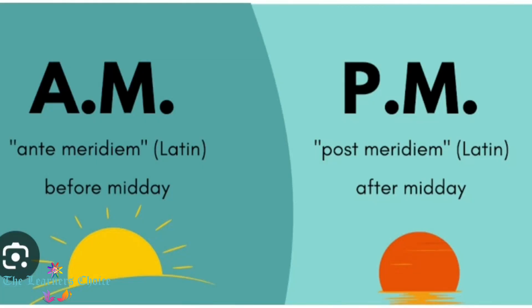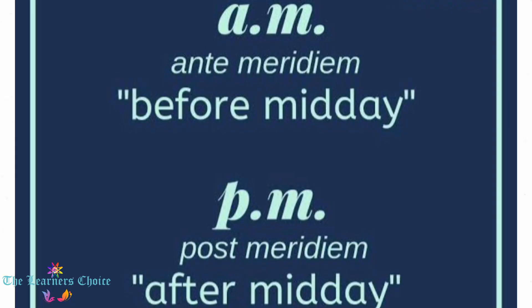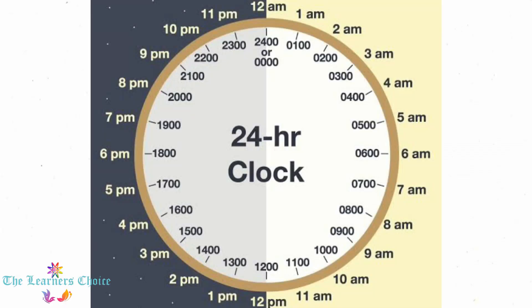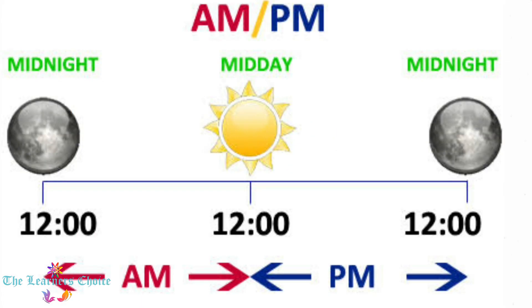AM and PM are both Latin terms used to represent time, where AM stands for ante-meridiem and PM stands for post-meridiem. The term meridiem is the combination of two words: meri, which means mid, and diem, which means day. Hence, ante-meridiem means before midday and post-meridiem means after midday.